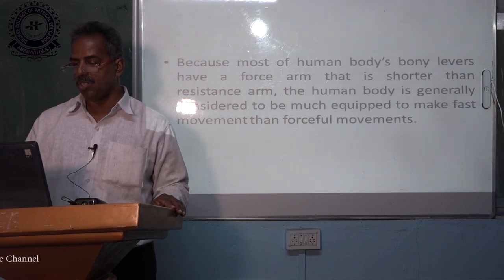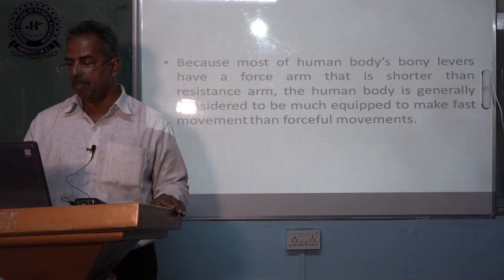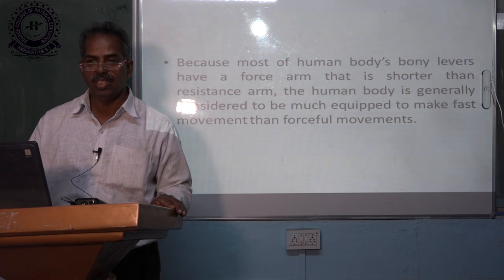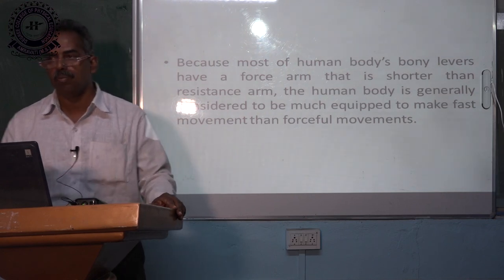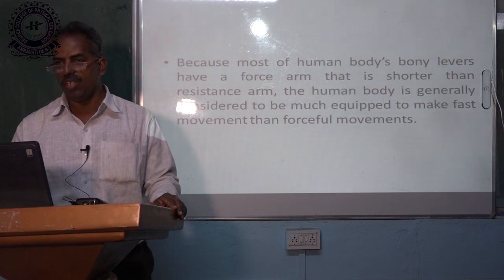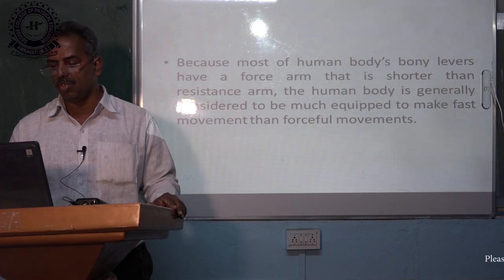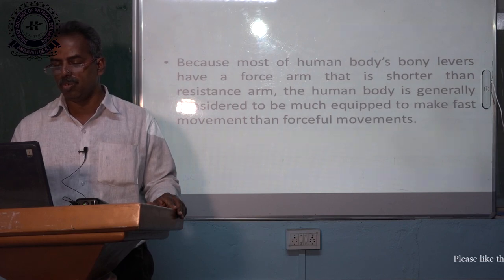Because most human body bony levers have a force arm that is shorter than the resistance arm, the human body is generally considered to be much better equipped to make fast movements than forceful movements. Our body is made in such a manner that most force arms are shorter, and that is why we are designed for fast movement, not forceful movements.